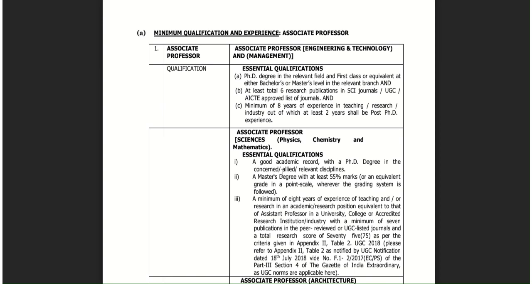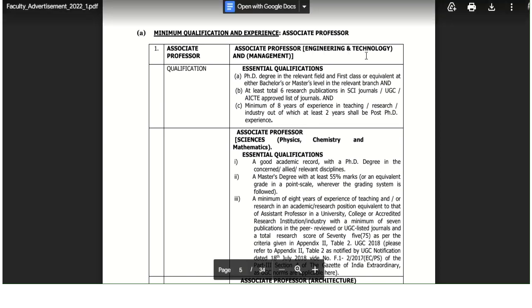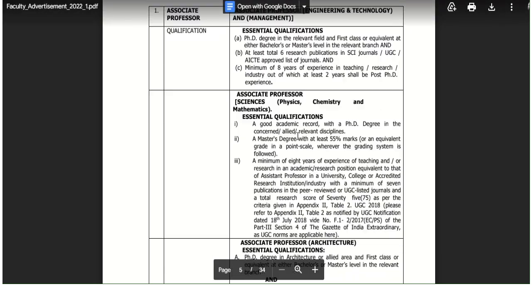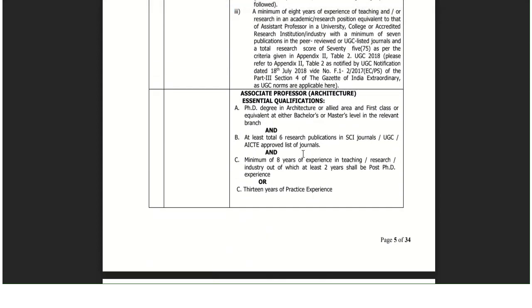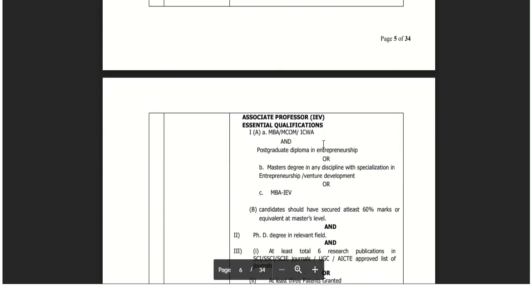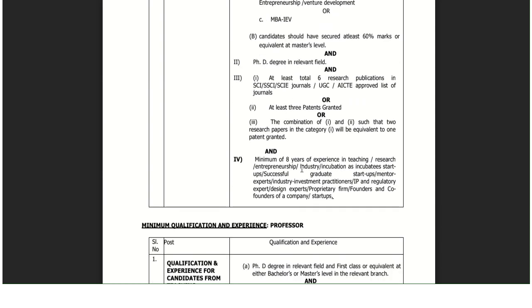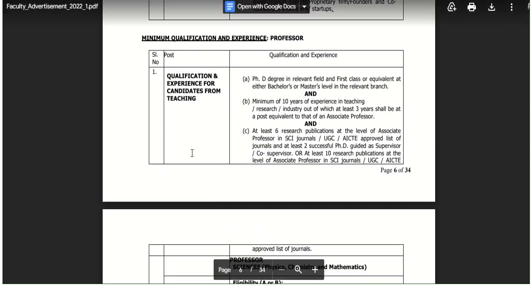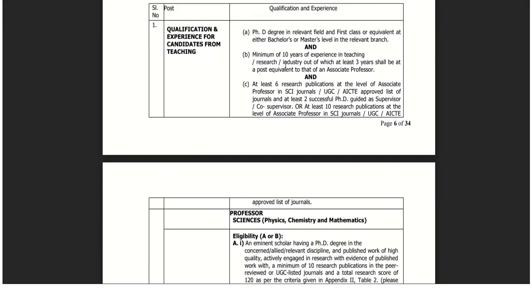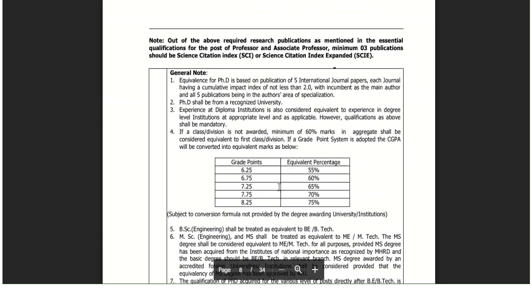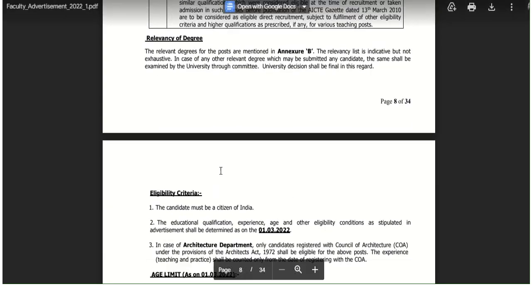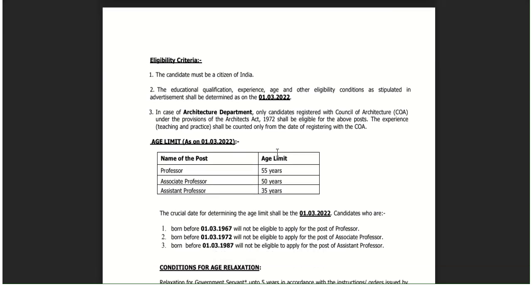For Associate Professor, PhD is compulsory. At least six research publications are required, and minimum eight years of experience in the field of Engineering and Technology as well as Management is needed. The same criteria applies for Science, Architecture, and IEV fields. For Professor posts, minimum 10 years of experience is required, and PhD is compulsory.